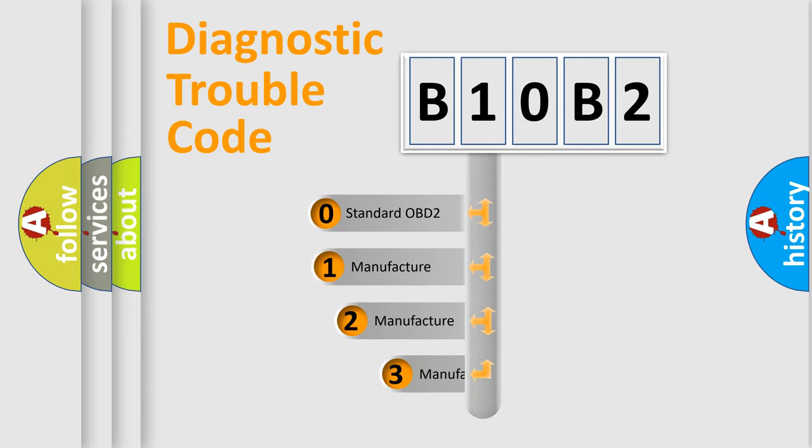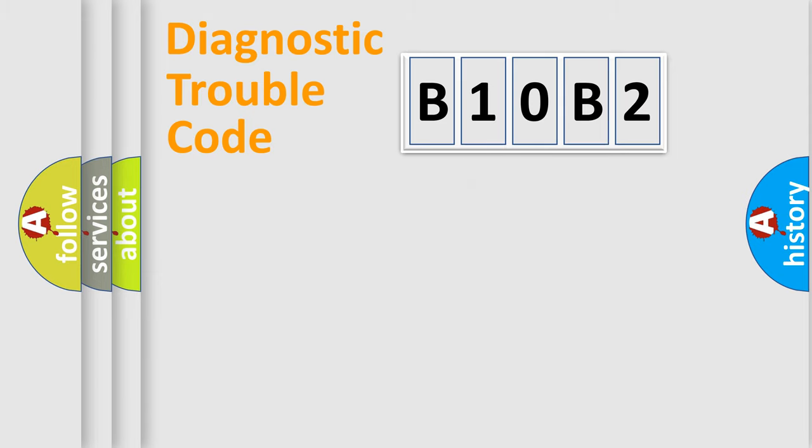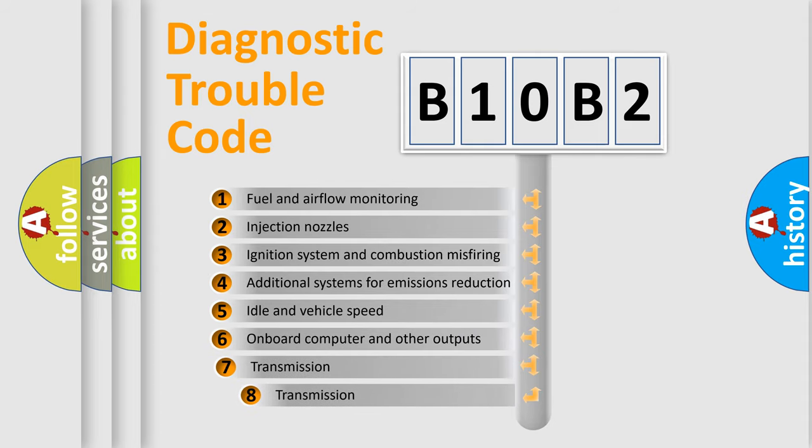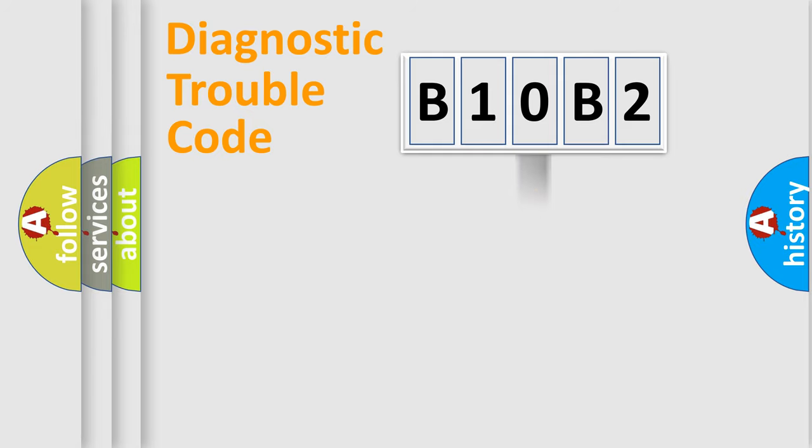If the second character is expressed as zero, it is a standardized error. In the case of numbers 1, 2, 3, it is a more prestigious expression of the car-specific error. The third character specifies a subset of errors. The distribution shown is valid only for the standardized DTC code.